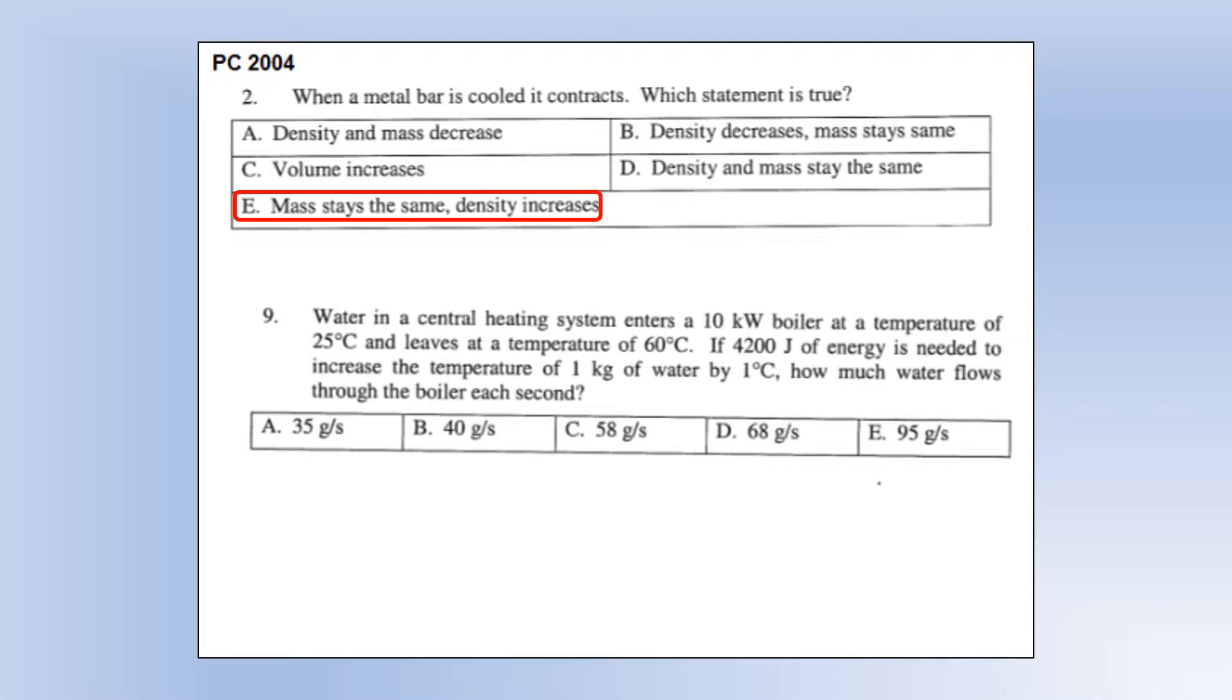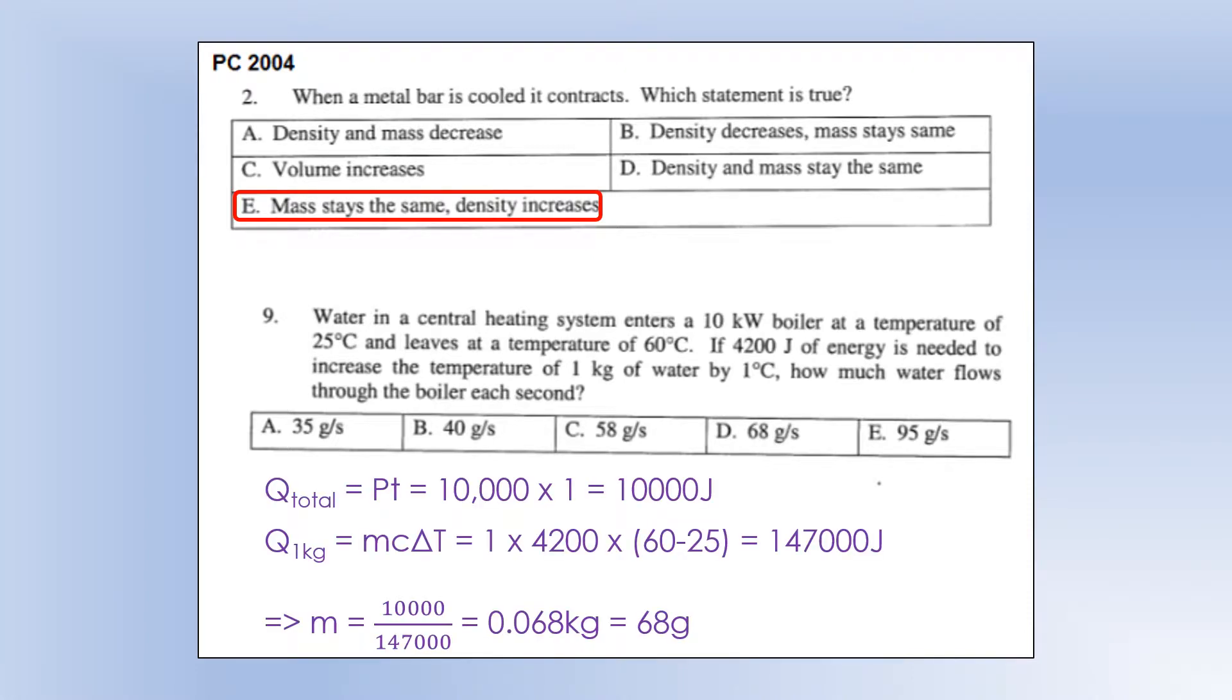Water in a central heating system enters a 10 kW boiler at a temperature of 25 degrees Celsius, and leaves at a temperature of 60 degrees. If 4,200 joules of energy is needed to increase the temperature of 1 kg of water by 1 degree Celsius, how much water flows through the boiler each second? I'm going to calculate the amount of energy we supply in 1 second. So if it's 10 kW, that's 10,000 joules every second. The amount of heat energy to increase 1 kg by that temperature change would be 147,000. To calculate the actual mass, I'm going to do 10,000 divided by the energy to raise 1 kg, and that gives us the mass in kg, which is 68 g, or option D.